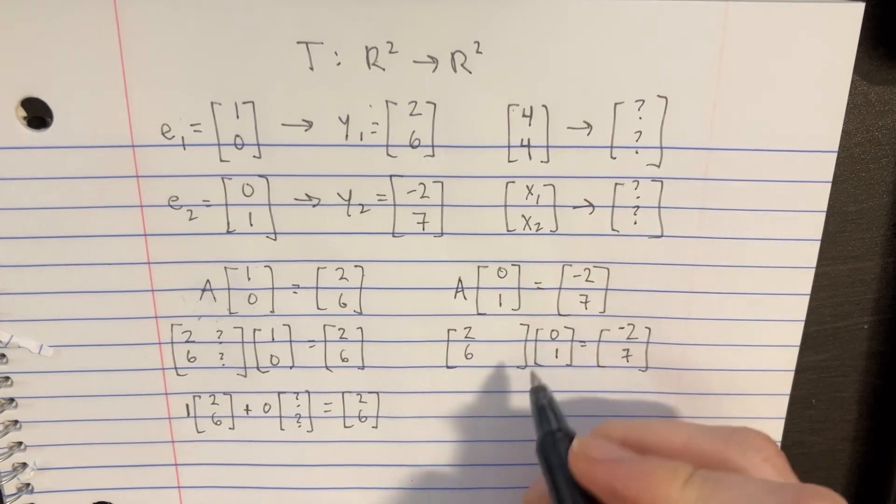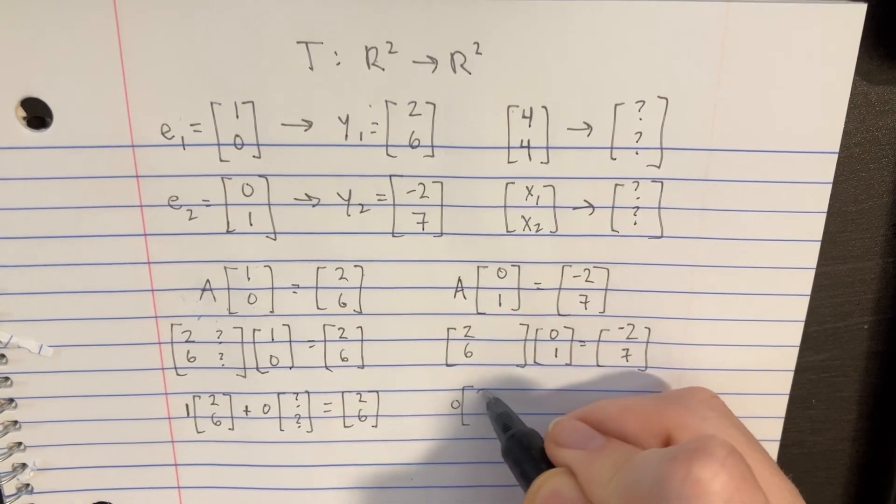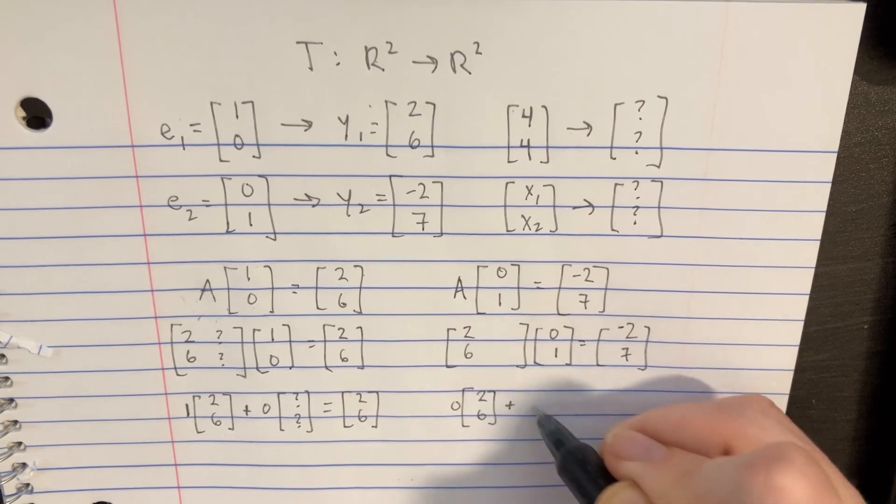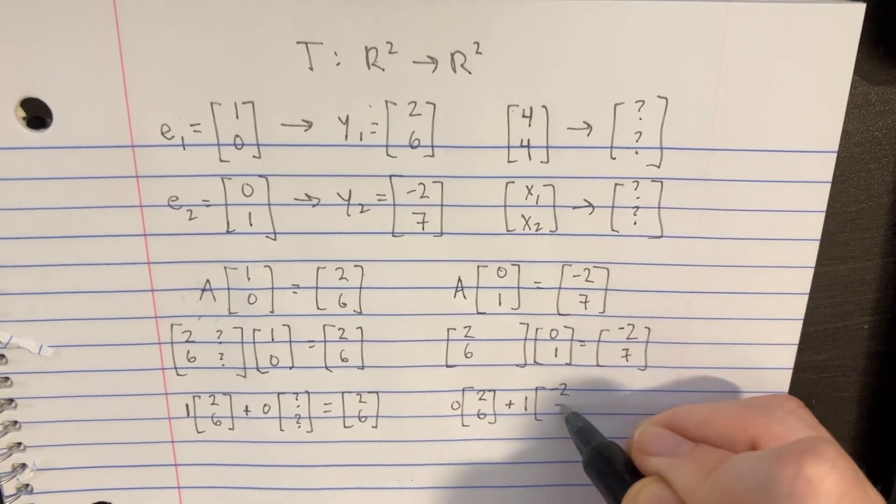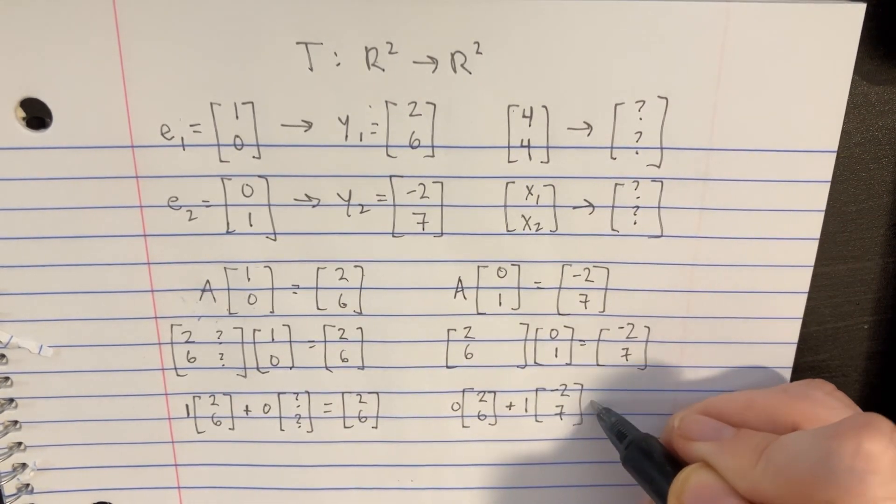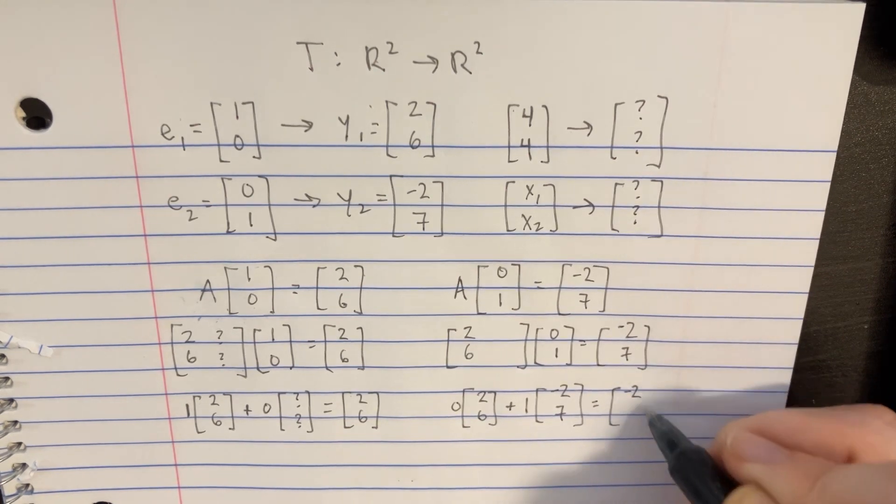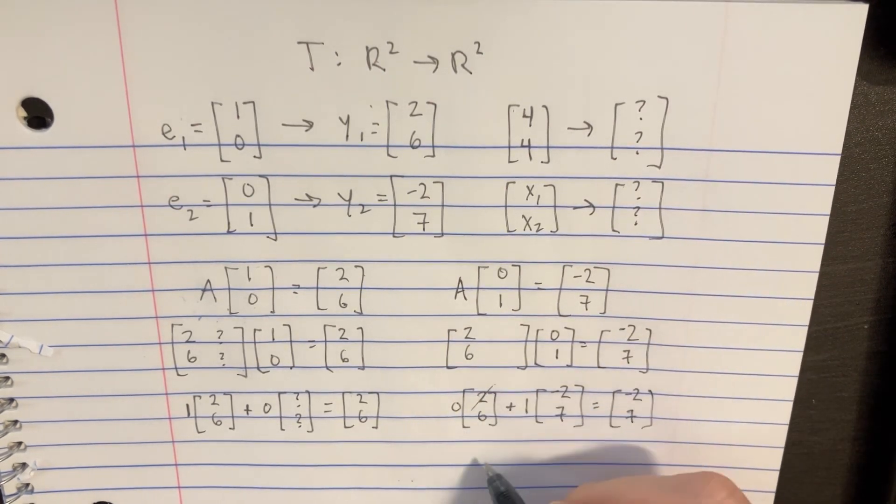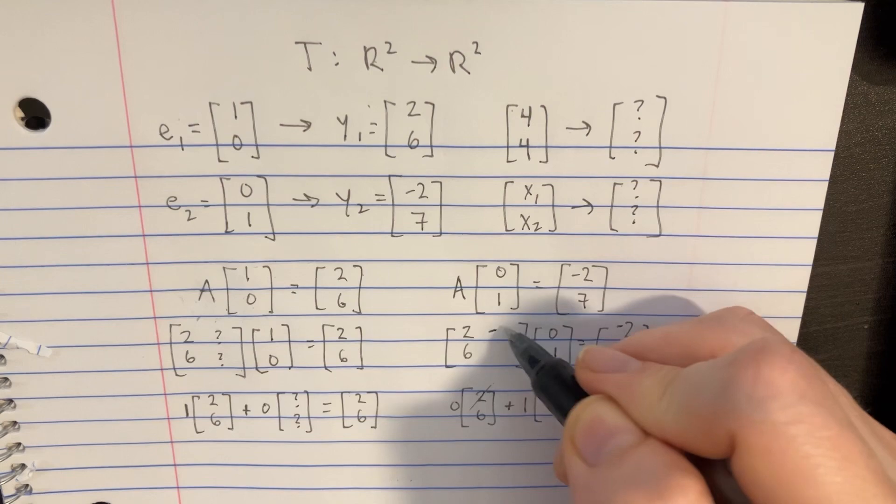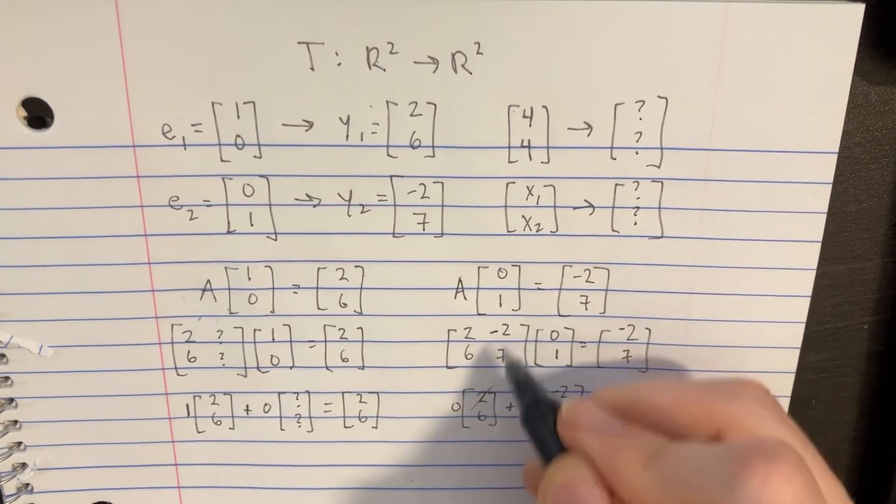And so the only thing that we could do here to get that to happen is we have 0, and then our 2, 6 over here, plus 1. We have to put the negative 2, 7 here in order to have it work out. So that way this equals negative 2, 7, because that's just going to go away. And so now we figured out this half of the A vector is equal to that.